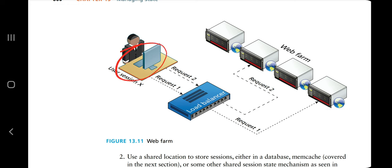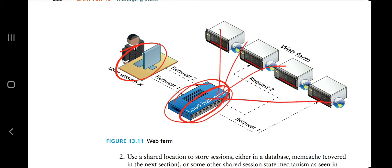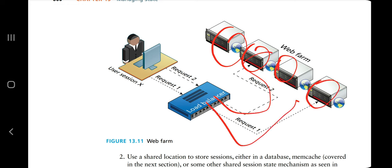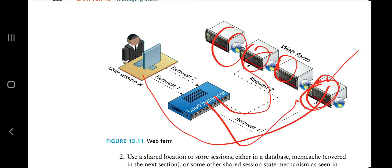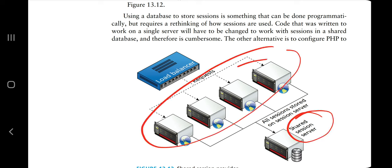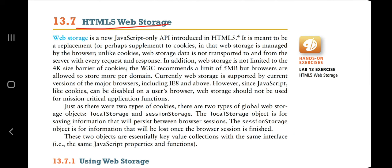Whenever a user makes a request it goes through a load balancer, which balances resources and timing between servers. Each website is stored in a different web server, and the request is matched to the corresponding web server, then the state stored on that server is retrieved back to the user. If you use a shared session server, requests going to different websites are all stored on that same session server.